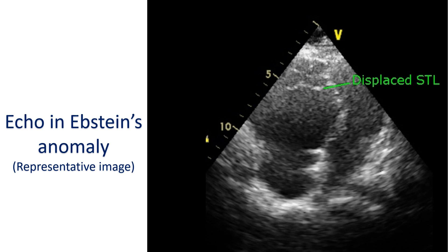Carpentier has classified Epstein's anomaly into 4 types. In Type A, the functional right ventricle is adequate and the anterior tricuspid leaflet is normal. In Type B, the functional right ventricle is small but the anterior tricuspid leaflet is normal. In Type C, the functional right ventricle is very small, the anterior tricuspid leaflet has restricted mobility, and may cause significant obstruction of the right ventricular outflow tract. In Type D, the functional right ventricle is only the infundibulum and the anterior tricuspid leaflet is adherent to the wall.